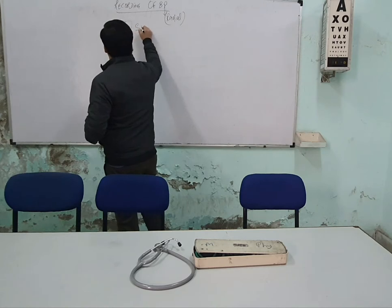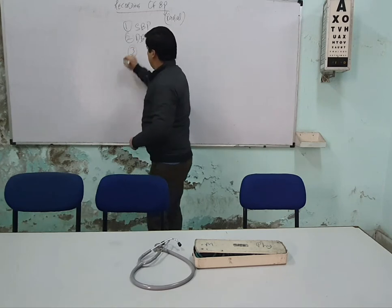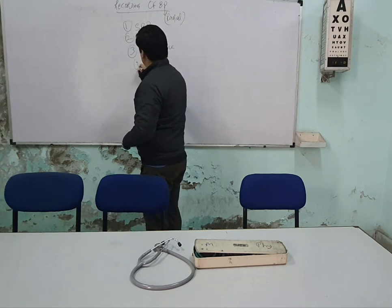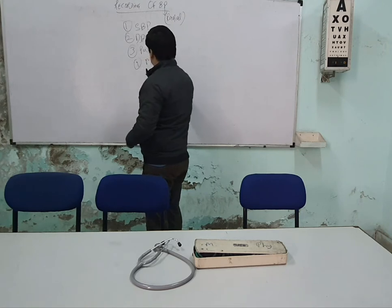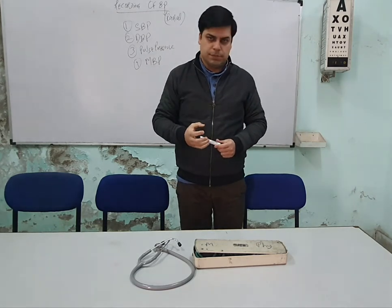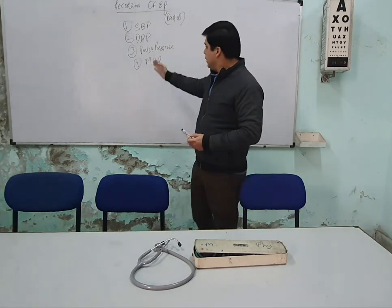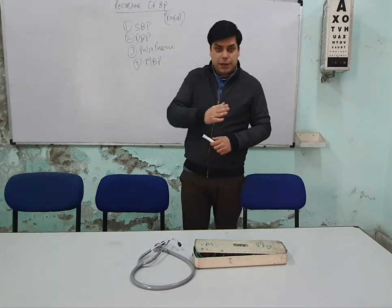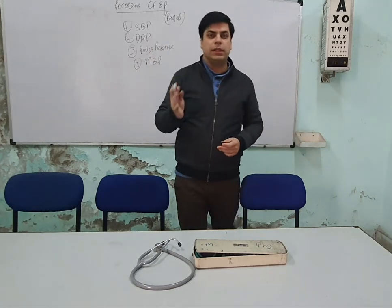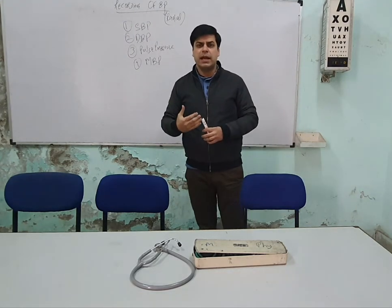The components of blood pressure are: number one, systolic blood pressure; number two, diastolic blood pressure; number three, pulse pressure; and number four, mean blood pressure. Systolic blood pressure is the maximum pressure exerted during systole, that is the contraction phase. Diastolic blood pressure is the minimum pressure exerted during diastole, that is the relaxation phase. Pulse pressure is the difference between systolic and diastolic blood pressure, and mean blood pressure is the average pressure throughout the cardiac cycle.